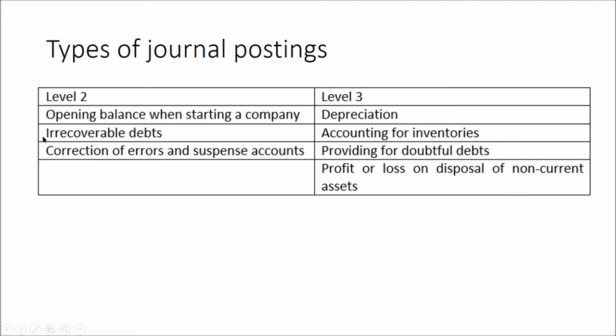So the types of journal postings at Level 2 are: opening balances when starting the company, irrecoverable debts, and the correction of suspense accounts. Those are the ones that go into our journal — our book for low volume journals.